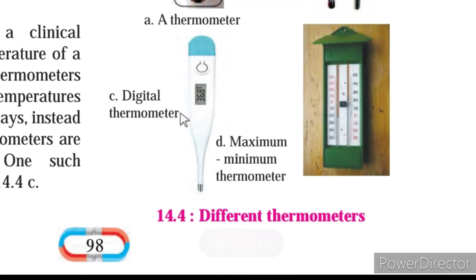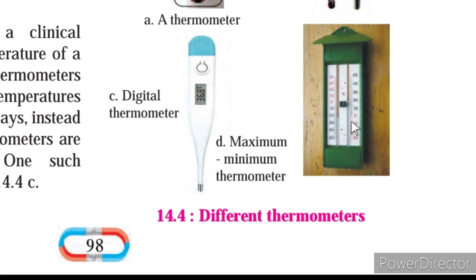The next type is a digital thermometer, in which temperature is shown digitally either in degree Celsius or degree Fahrenheit. One additional provision in this digital thermometer is that above 99 degree Fahrenheit, it gives a beeping sound to indicate the temperature. There is also a maximum-minimum thermometer, which indicates both the lowest and the highest temperature recorded in a day.